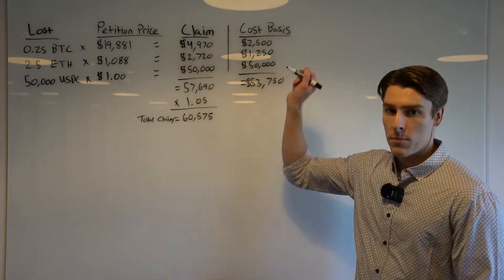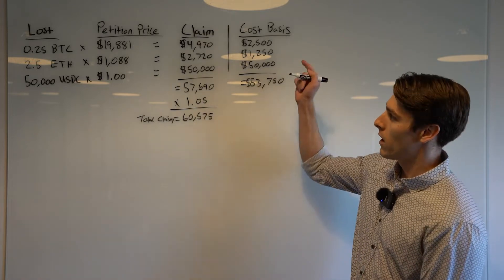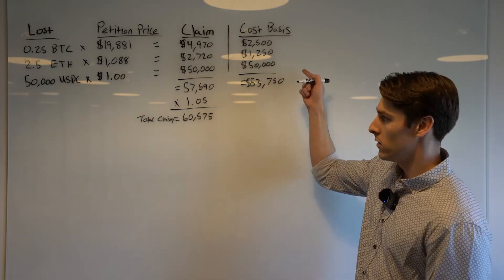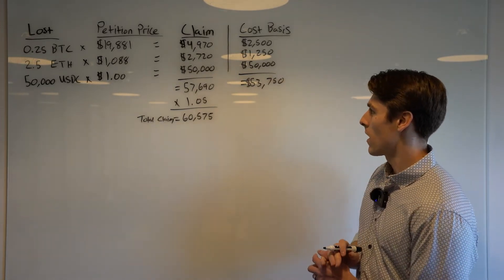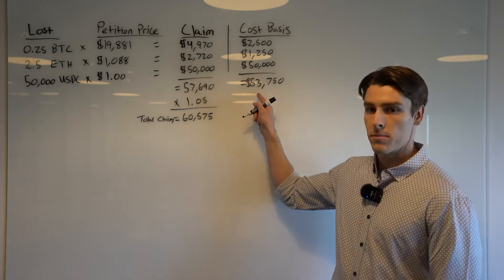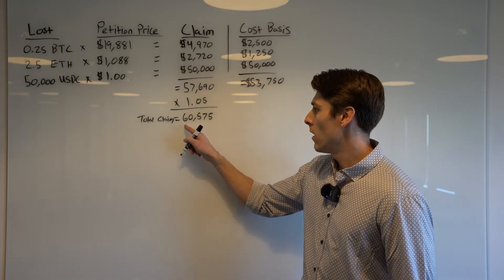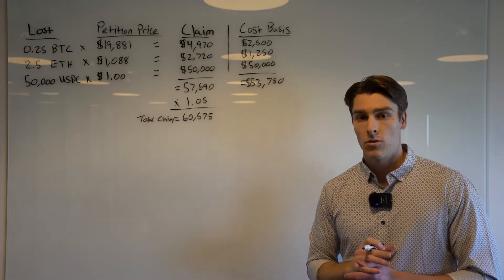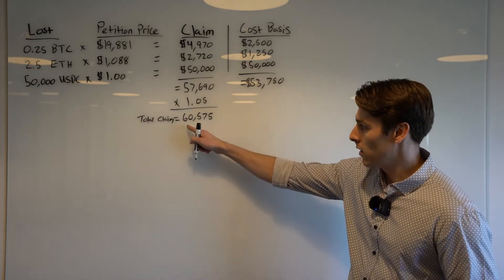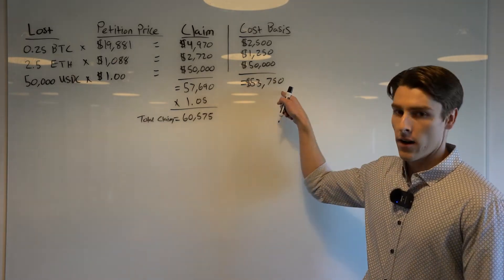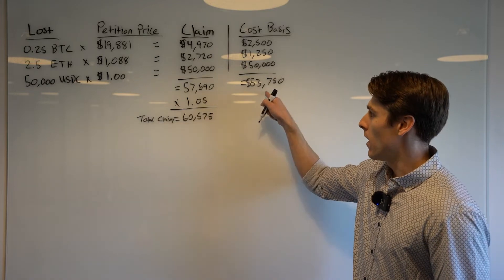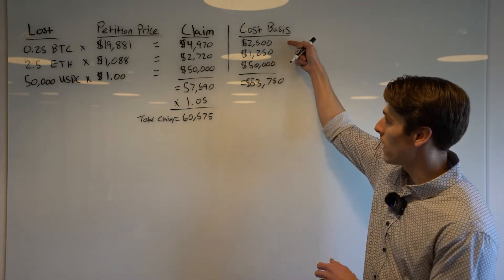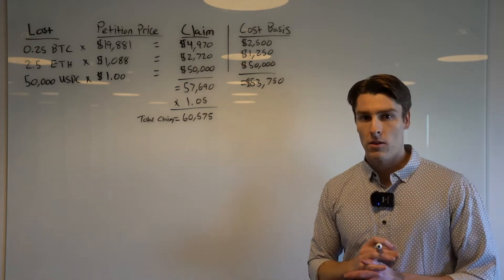The next step is to determine your cost basis. On the 0.25 Bitcoin we had a $2,500 cost basis, on the Ethereum we had a $1,250 cost basis, and the USDC is pegged to the dollar so we had a $50,000 cost basis — leaving a total cost basis of $53,750 and a total claim of $60,575. One important thing to note: if it weren't for the like-kind distributions, this would actually be a gain scenario because the claim they are receiving is worth more than the cost basis. But because of the returned Bitcoin and returned ETH, we can carry that cost basis back, defer the gain, and actually still claim a loss.